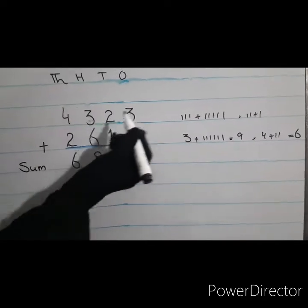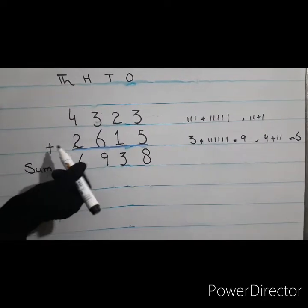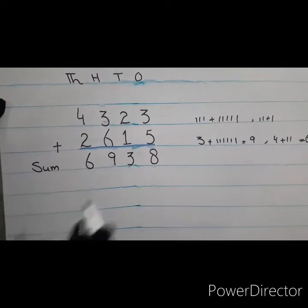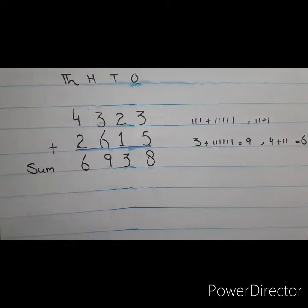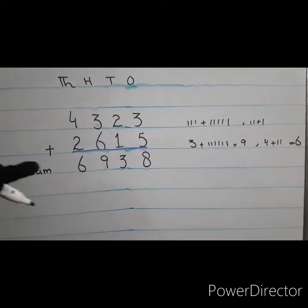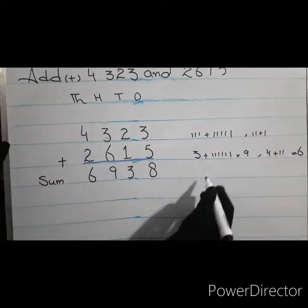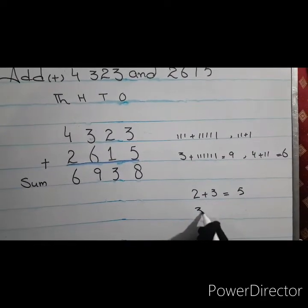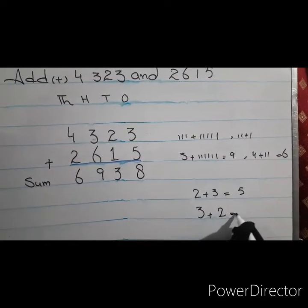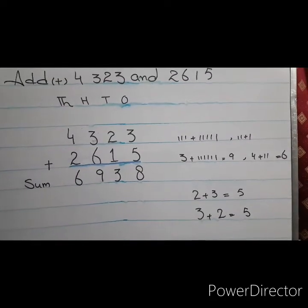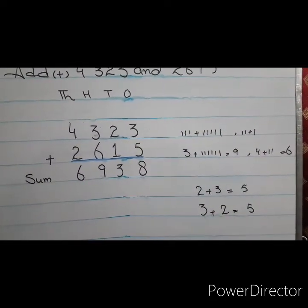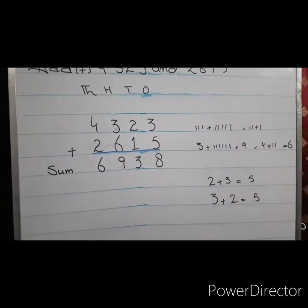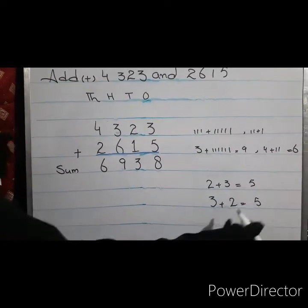When we add four thousand three hundred twenty-three to two thousand six hundred fifteen, the sum is six thousand nine hundred thirty-eight. Remember, students, one thing: in addition, if we change the position of numbers — like two plus three equals five, and three plus two also equals five — changing position does not affect the answer. This is a property of addition.